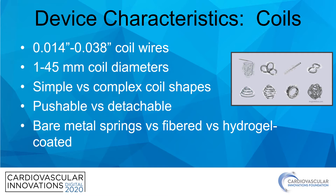The traditional coil was a pushable one, meaning there was no attachment to a delivery cable and the coil was simply pushed into the target vessel. More contemporary iterations come in detachable varieties where the coil is only released from the delivery cable once it is felt to be in an appropriate position. The makeup of the coil can be bare metal or fibered with synthetic materials such as polyester, and can also be coated with hydrogel to promote vessel occlusion.